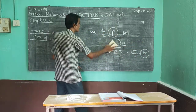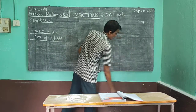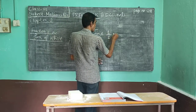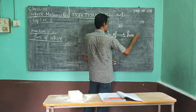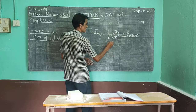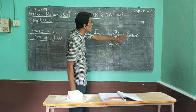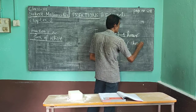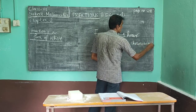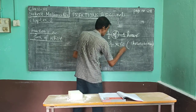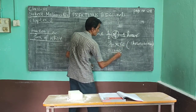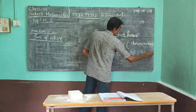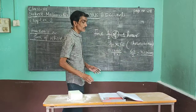Another example of a word problem: find one by two of one hour. Since 'of' means multiplication, and one hour equals 60 minutes, we get one upon two multiplied by 60, which equals 30 minutes. So this is how we can solve such word problems involving fractions.